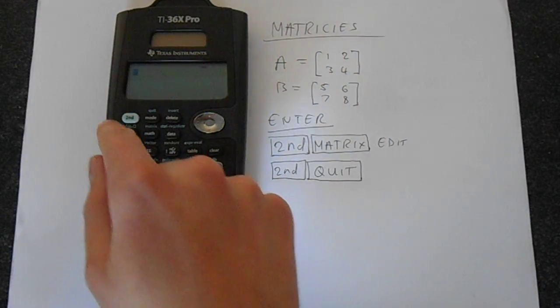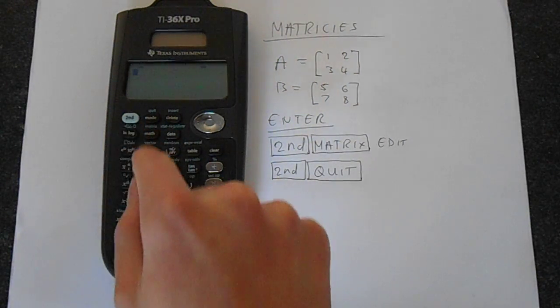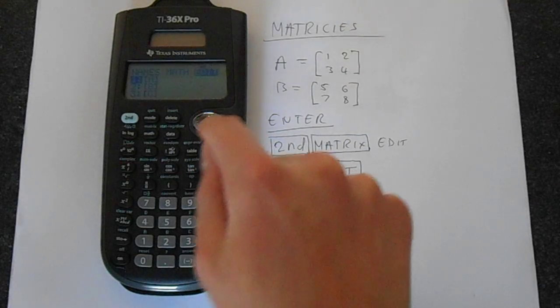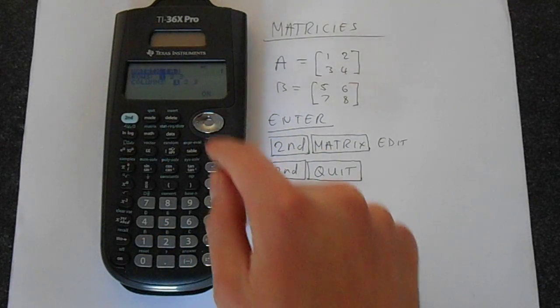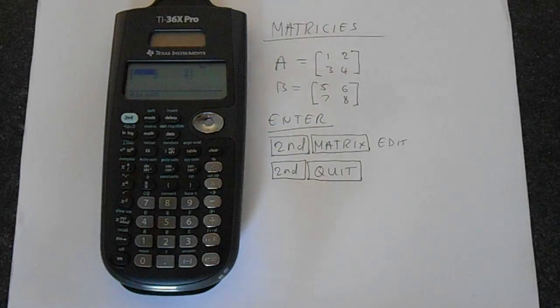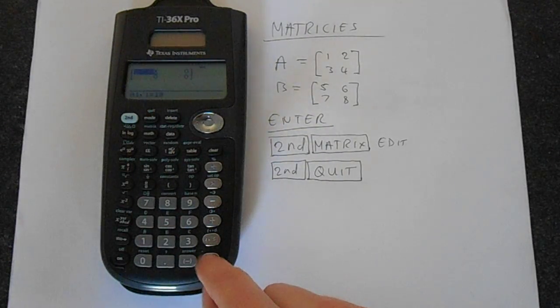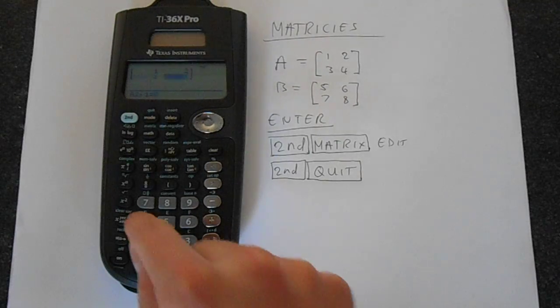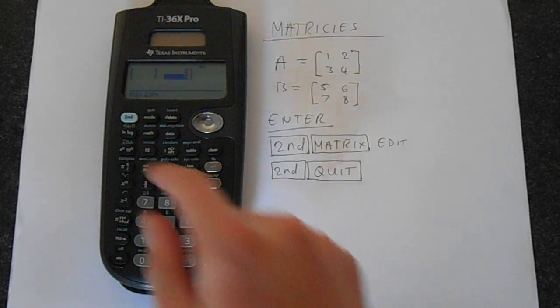So to enter these matrices we simply go to second function matrix, go across to edit and we can access matrix A. We're going to make this 2 by 2. Just fill in these menus. Very simple. So 1, enter, 2, enter, 3, 4 and then we just quit this.